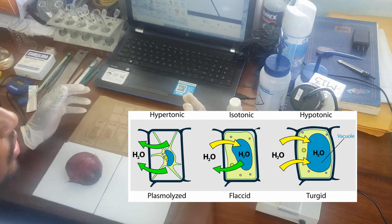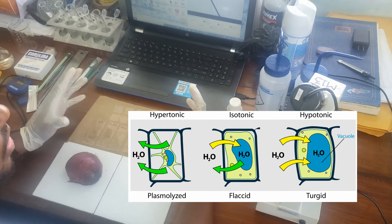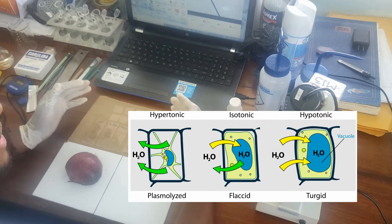Then there's a hypotonic solution where the concentration of water outside the cell is more than that inside the cell, so in that case water will move inside the cell at a far greater rate than it moves out of the cell.